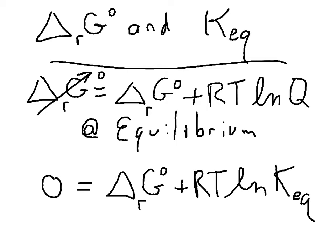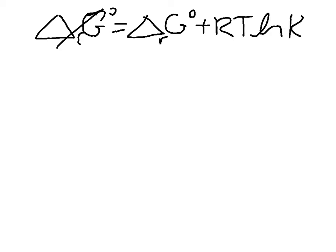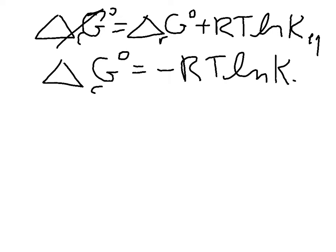So we can rearrange this. We had that delta G is equal to delta G standard plus RT log of K, if we're at equilibrium. And so we can rearrange this to say delta G standard is equal to negative RT log of K equilibrium.